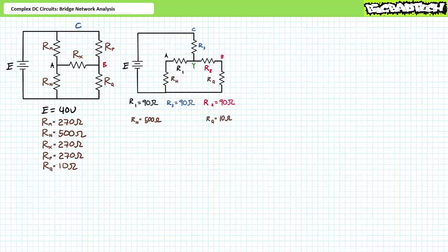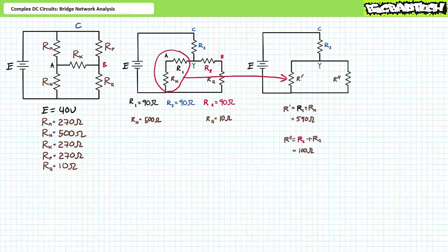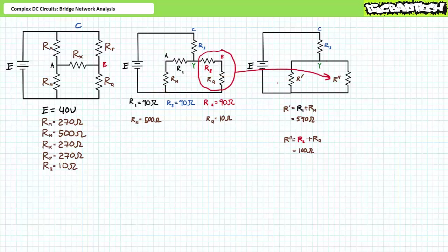Substituting in the balanced Y configuration at nodes A, B, and C results in a purely series-parallel circuit. We gain access to an additional central node Y, but we lose direct access to Rx. However, if we solve for the nodal voltages at A and B, we can solve for the voltage differential across Rx. R1 and Rn are in series, a simplification R-single-prime with a value of 590 ohms. R2 and Rq are in series, R-double-prime with a value of 100 ohms. At this level of simplification, node A is internal to R-single-prime and node B is internal to R-double-prime.